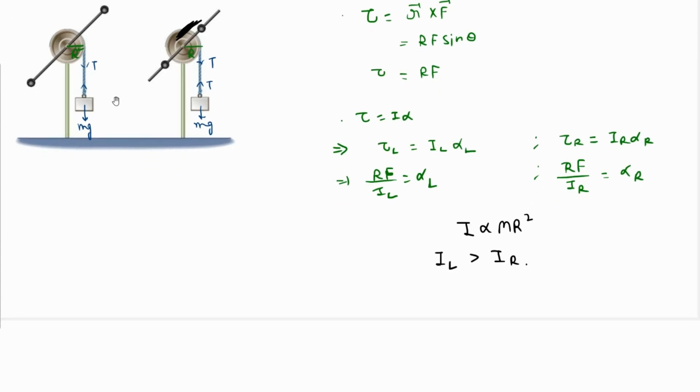Since it is less, and I_L is in the denominator, the denominator is higher, so the overall ratio is going to be smaller. This results in the angular acceleration of the left one being smaller than the angular acceleration of the right one.